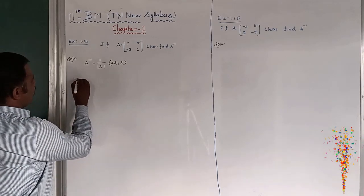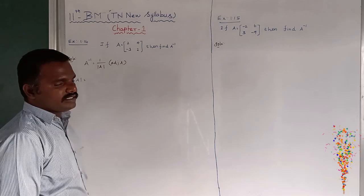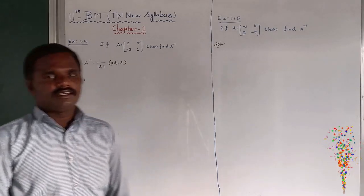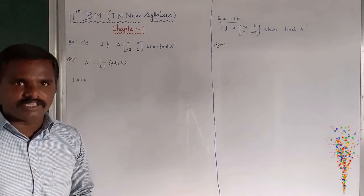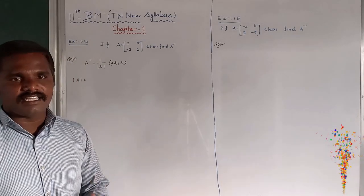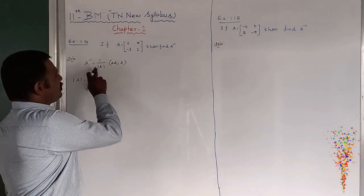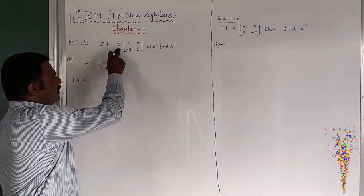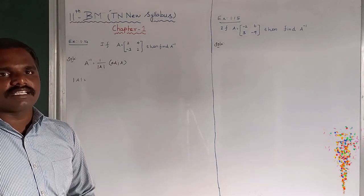First, you people find out the modulus of A because you have to find if it is singular or non-singular. The condition of A inverse is A must be non-singular. In case it will be singular, means A inverse does not exist.